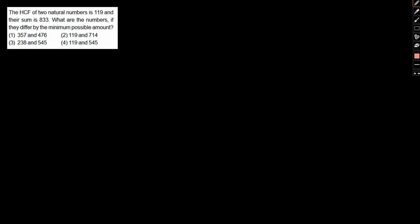Let's take a look. The HCF of two numbers is 119 and the sum is 833. What are the numbers if they differ by the minimum possible amount?